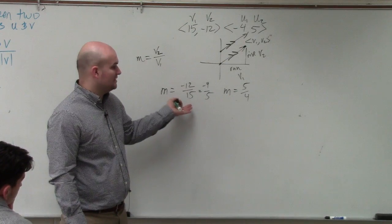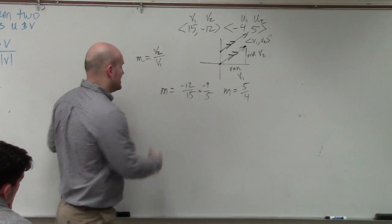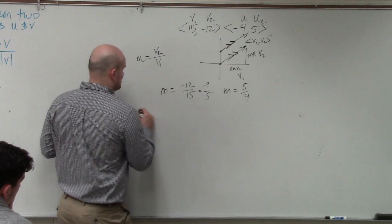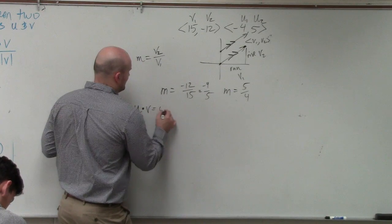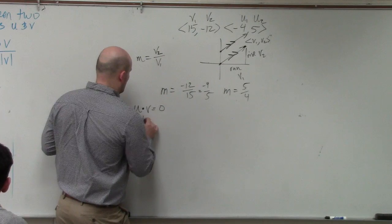Do these work? I mean, are these the same slope? No. So the next thing is, they're not the same slope. The next thing, if we do the dot product, u dot v equals 0, then they are orthogonal.